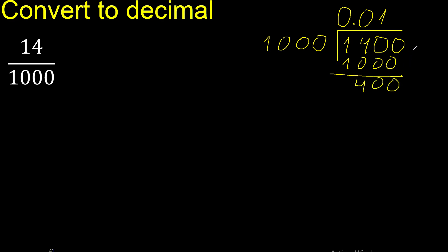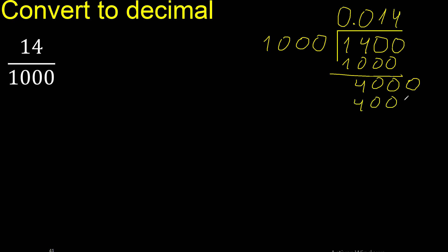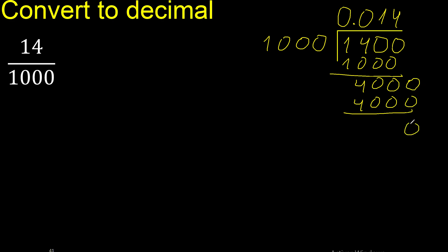Subtract — there is no number that goes down, therefore complete with 0. Point is here. 1000 multiplied by which number? Multiplied by 4 is exact. Subtract: 0. Therefore finish.